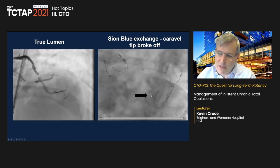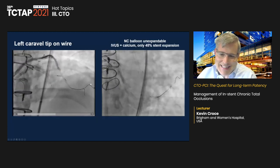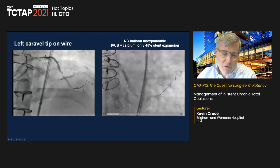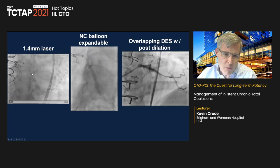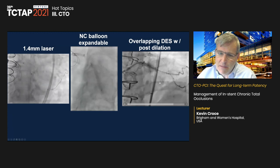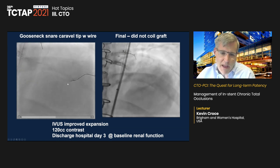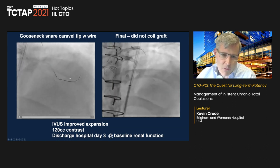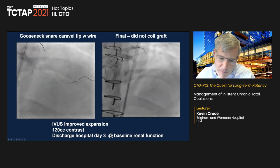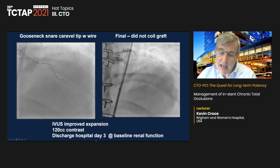The distal cap was recalcitrant and required a penetrating wire. We eventually got into the true lumen but had difficulty exchanging to a workhorse wire — most microcatheters including a Turnpike Spiral would not go through. Using a Caravel for its low profile, we were able to get a Sion Blue into the vessel. IVUS showed only 45% expansion due to calcium, so we used laser atherectomy with a 1.4 laser, eventually achieving good stent expansion across the entire segment.